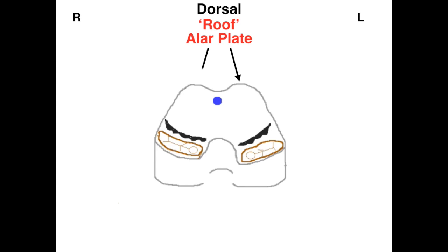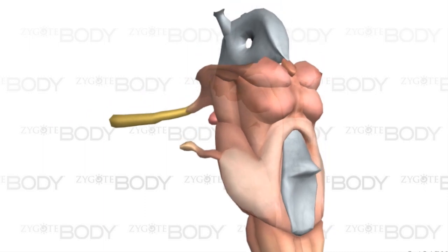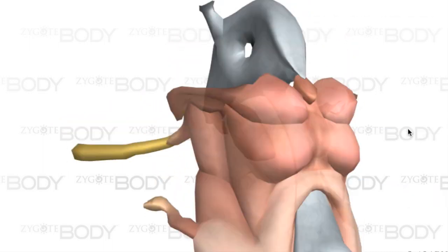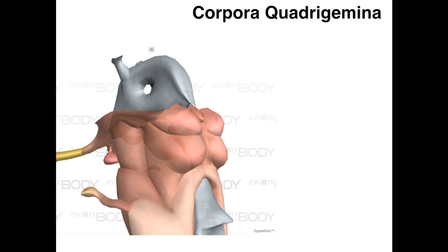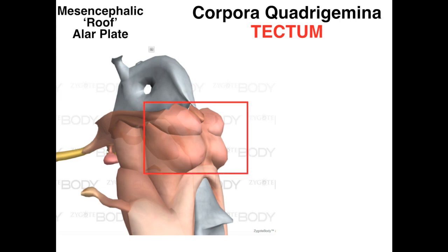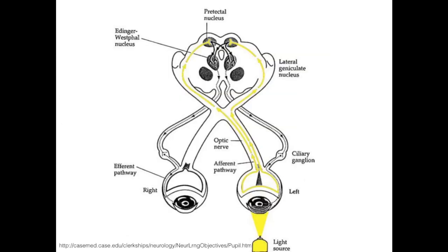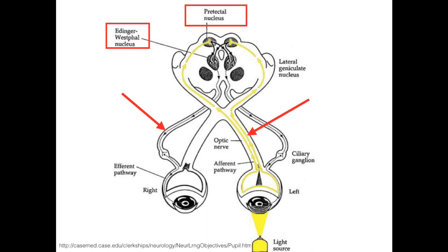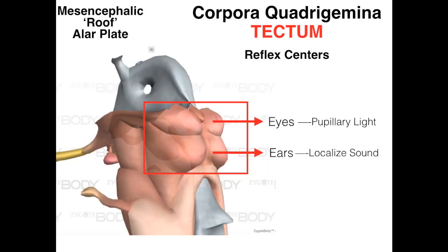The dorsal aspect or roof of the midbrain is made up of four bulges known as the superior and inferior colliculi, or corpora quadrigemina. This roof of the midbrain is more commonly referred to as the tectum — only in the midbrain, though. The colliculi are reflex centers for the eyes and ears. The superior colliculi contain the pretectal nuclei, which are constantly fed light information from cranial nerve 2 for the purposes of ruling the pupillary light reflex via the Edinger-Westphal nuclei and cranial nerve 3's nerve fiber. The inferior colliculi are known to play a role in localization and discrimination of sound with cranial nerve 8.